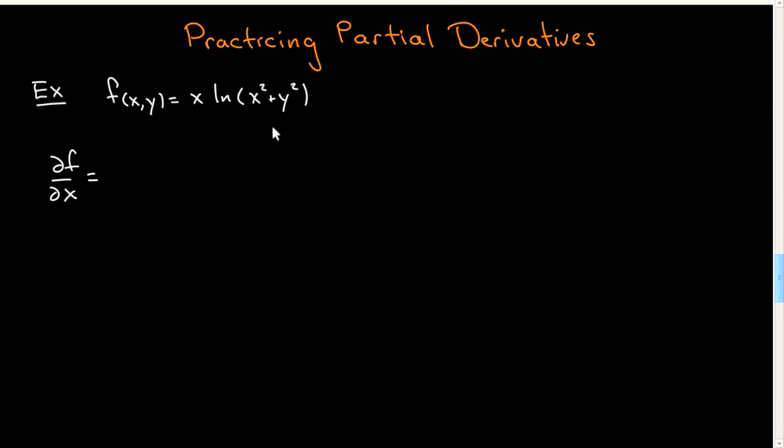And let's see, so at the outermost level, I have the product of two things. So we have to use the product rule. So that's the derivative of the first term. That'll be one times the second. Plus the first times the derivative of the second.